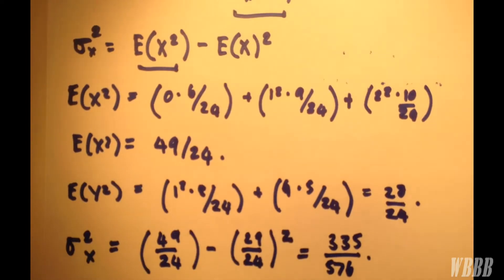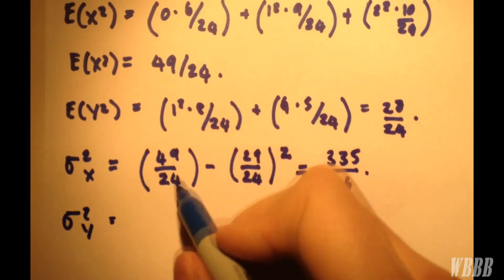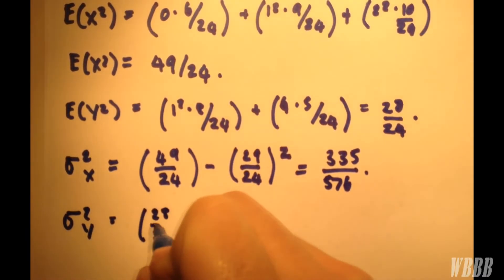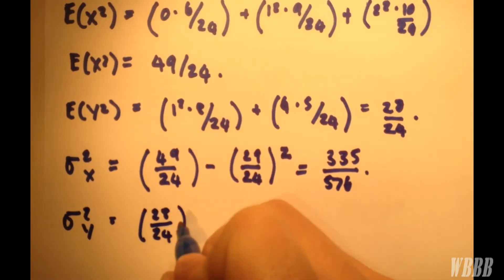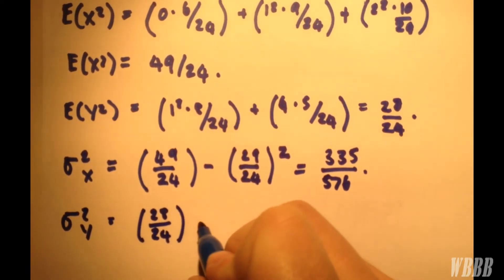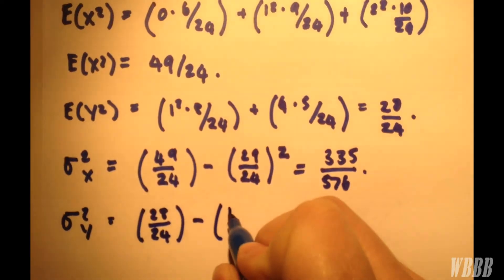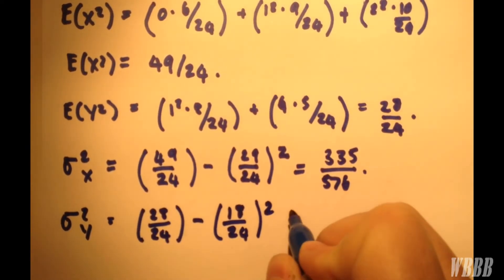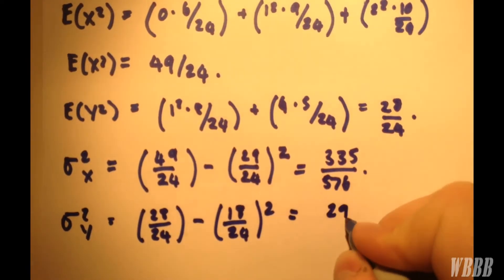We'll do the same for Y, putting everything into this original formula. So we have 28/24. I do apologize if this is a bit thick, the pen. Minus E(Y) all squared, so 18/24 to the power of 2. And that gives a much lovelier 29/48.